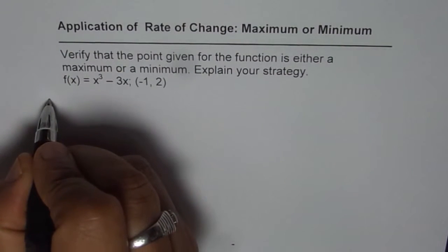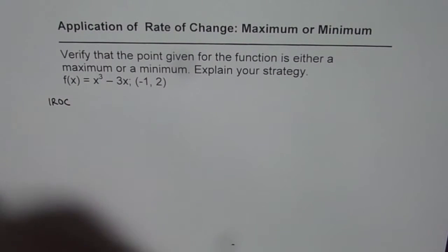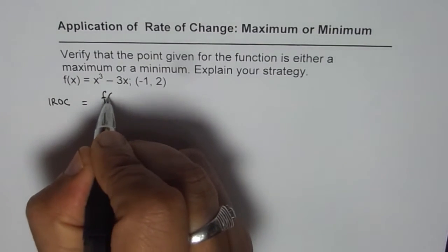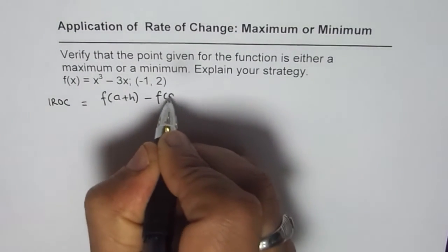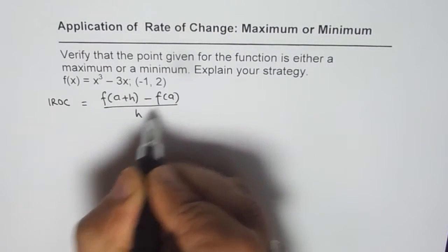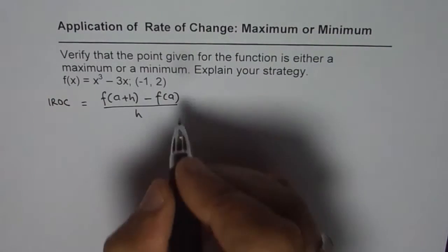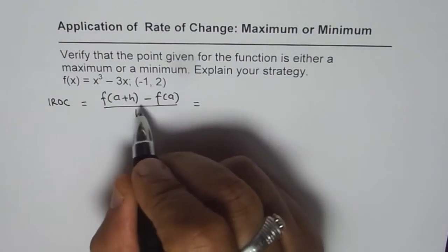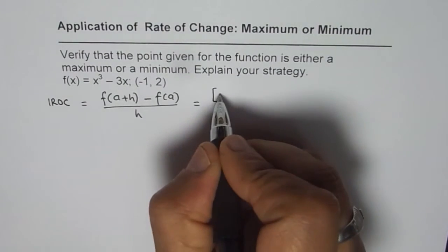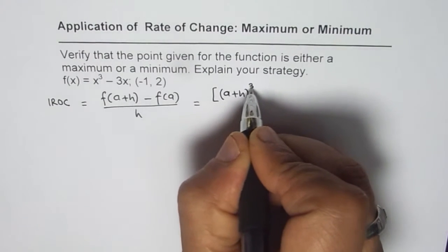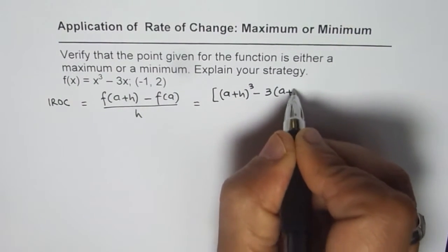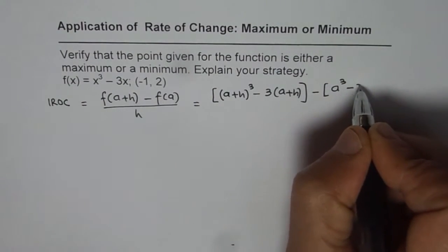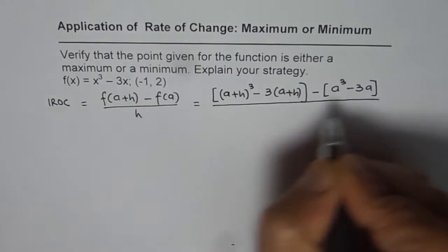We will try to find the instantaneous rate of change for this function at a general point — let's say the general point is a. So we can say that should be [f(a+h) - f(a)] / h, where (a+h) - a gives us h. For the given function 2x³ - 3x, let me substitute a and a+h for x. So the first term will be (a+h)³ - 3(a+h), that is f(a+h) minus f(a), which is a³ - 3a, over h.